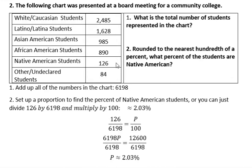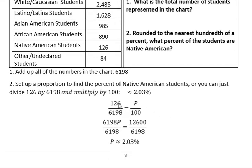In this case, the shortcut would be to take the 126 students that are Native American and divide by the total number of students, then multiply by 100 to get a percent — because dividing gives you a decimal, and multiplying by 100 converts it. That gives you approximately 2.03, rounded to the nearest hundredth of a percent. If you don't want to use the shortcut, set up the proportion: 126 over 6,198, and cross multiply.